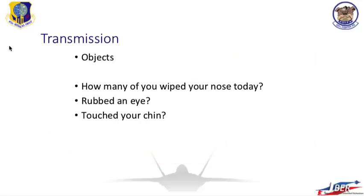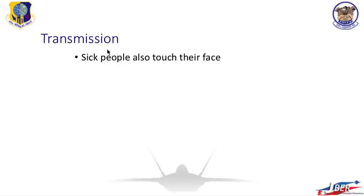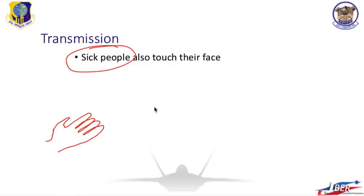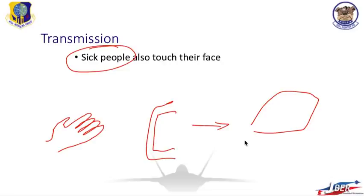But there's another way for the virus to spread. How many of us have wiped our nose, rubbed an eye, or touched our faces at some point today? Probably most of us. The problem is sick people also touch their face. All it takes is for one sick person to rub their eye and touch a door handle, and if you touch that same door handle on the way to the lunchroom and take a bite of a sandwich before washing your hands, you acquire the infection too. This is why it's so important to wash our hands frequently.